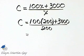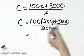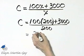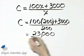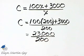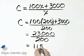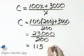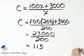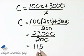100 times 200, that is 20,000 and 20,000 plus 3,000 is 23,000 divided by 200. If you divide 200 into 23,000, you will have 115. So the cost per desk when you're manufacturing 200 desks is 115 and that is in dollars.